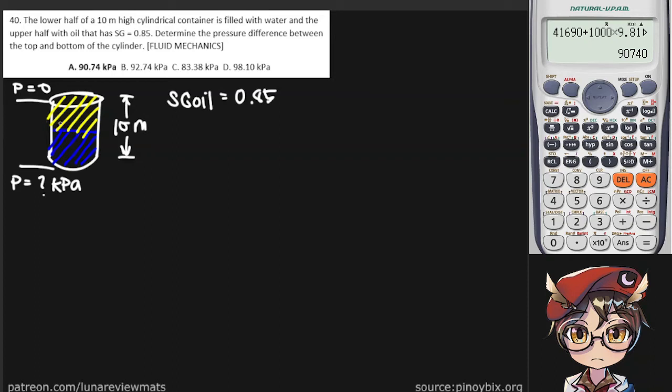So in the upper half we have our oil and the pressure given at the halfway point be the pressure of our oil. And we can simply use the classic rho g h. The density of our oil can be found by simply multiplying our SG by 1000.